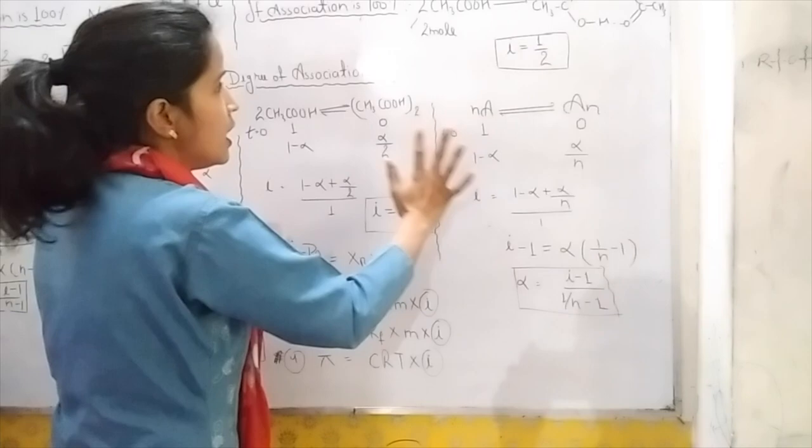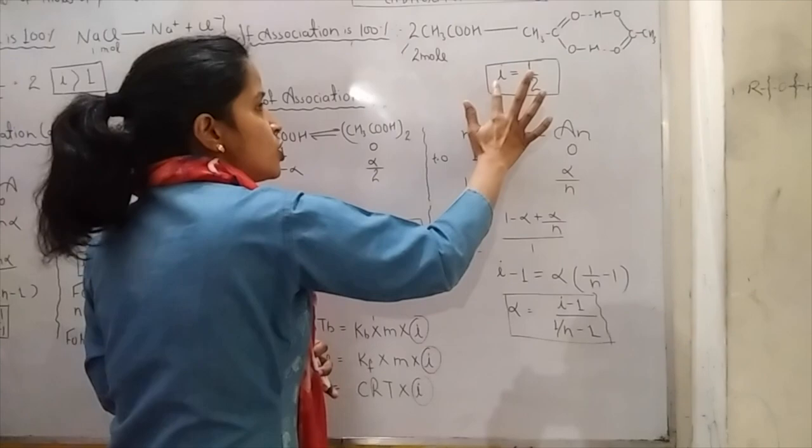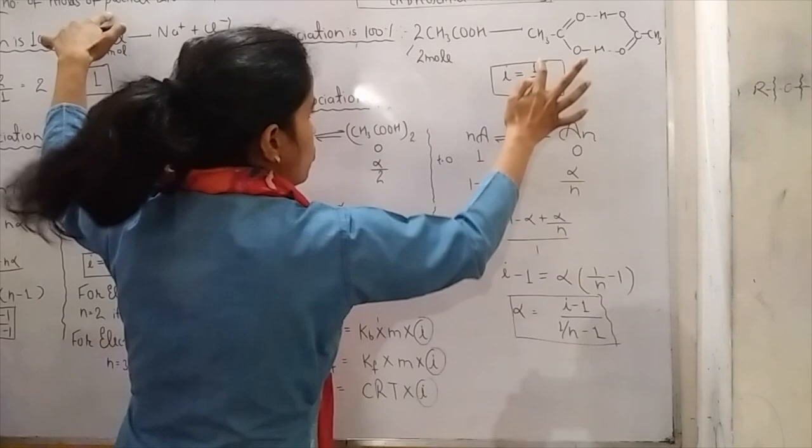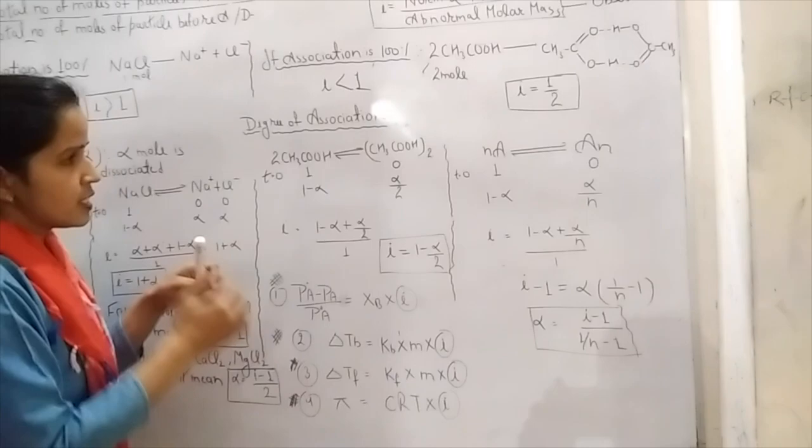Now another case: association. If association is 100%, we have taken two moles of CS₂ which completely associate to give one unit. So i = 1/2, meaning i is less than one. In case of dissociation i > 1, and in case of complete association i < 1.